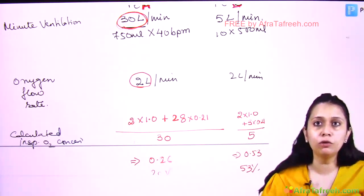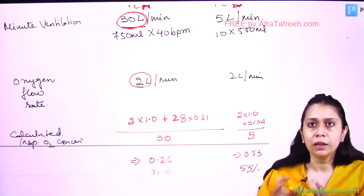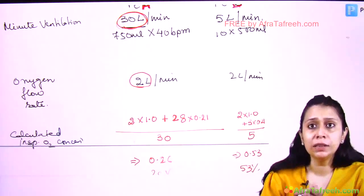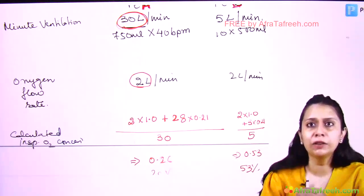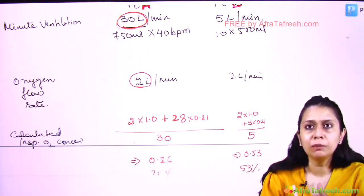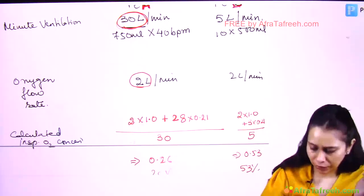This is the problem of low flow oxygen delivering devices. In a patient with a stable breathing pattern, these are beautiful devices — they can even deliver very high FiO2. But the patient's ventilation must be stable for low flow oxygen delivering devices to work well.